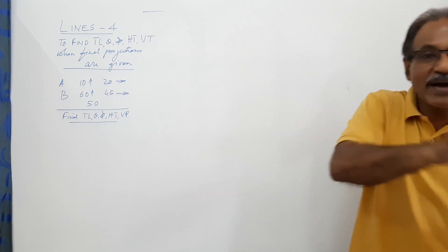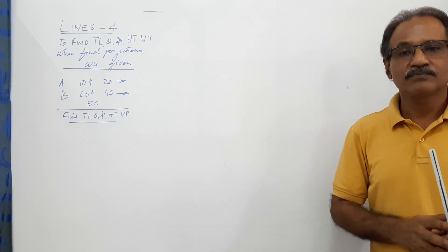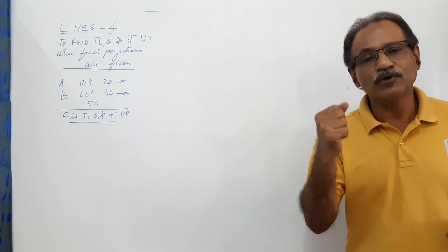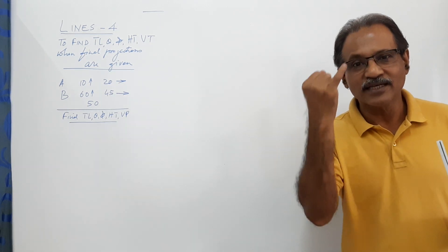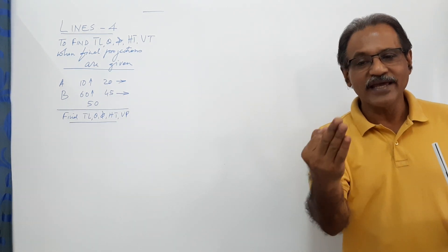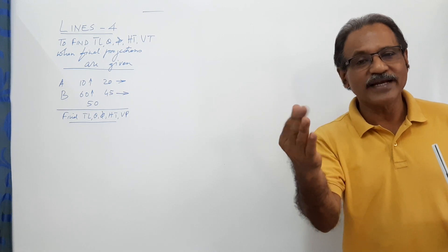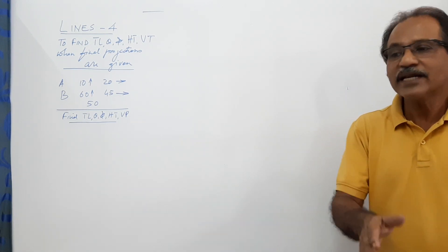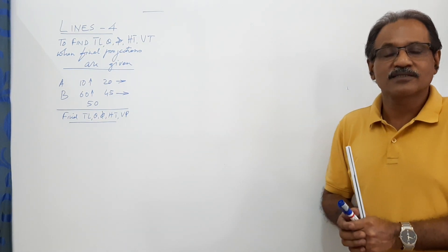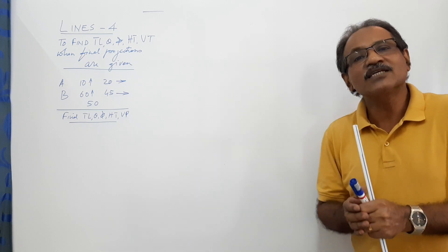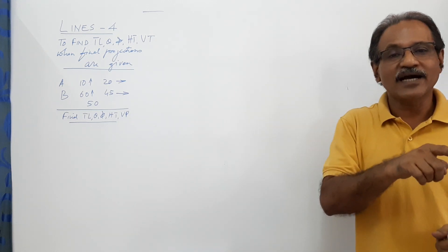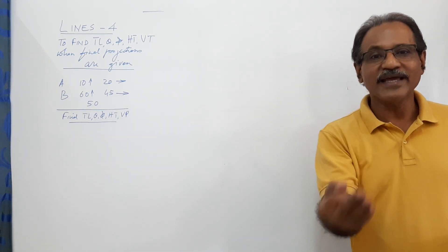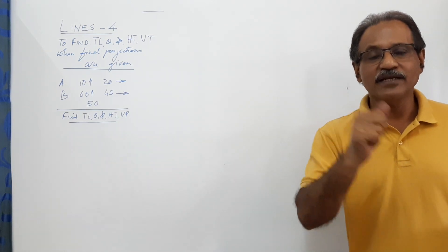We are exactly going back. We know how to draw the projections when true length, theta, phi and location of a point are given. Here you will be given the final projections, and you will be asked to go back and find out true length, theta, phi, ht and vt.